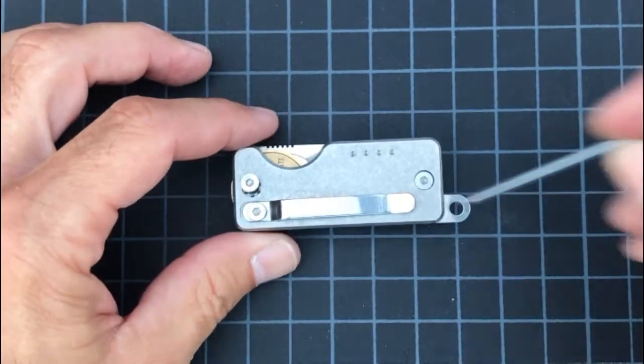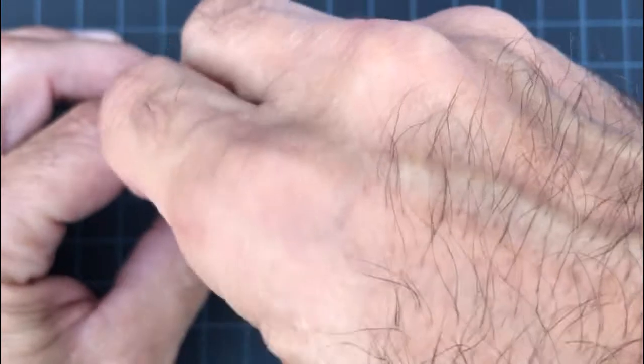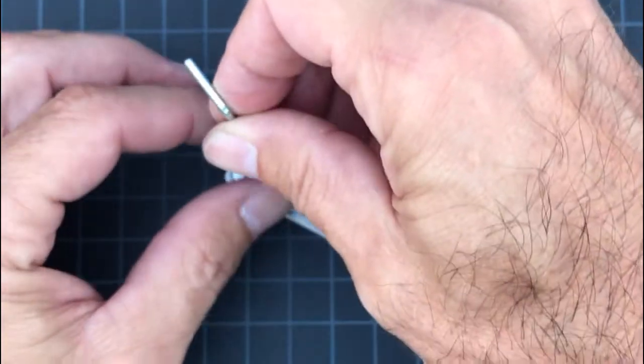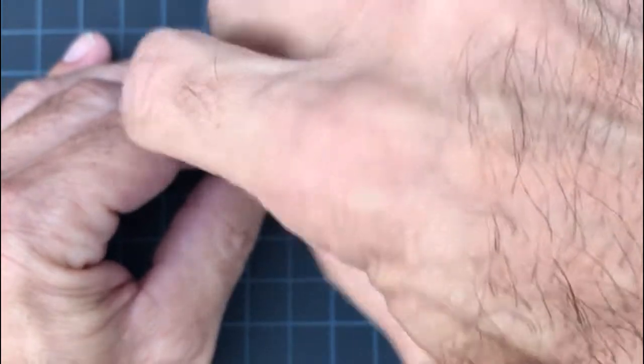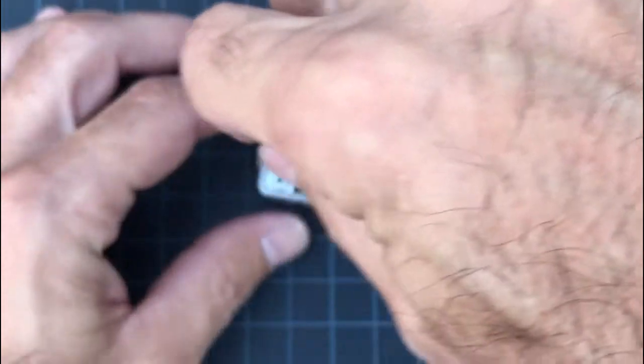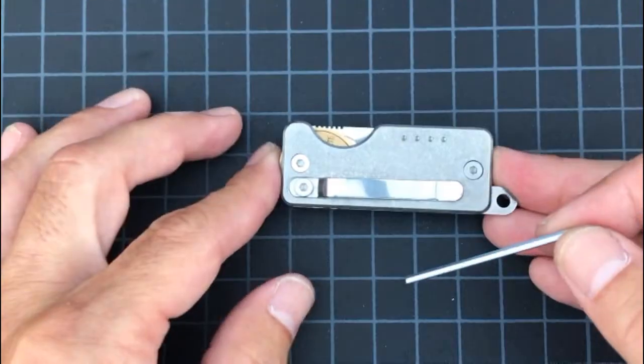Okay, now it's just snug. You don't want to continue from there, you just want to spin it just so it's snug. Go ahead and do the other side as well. Starting to get tight, just snug.